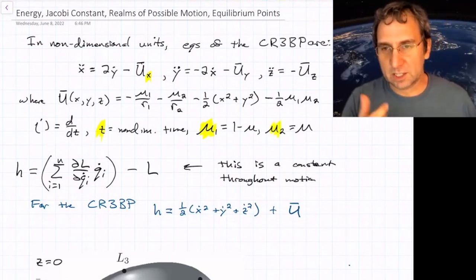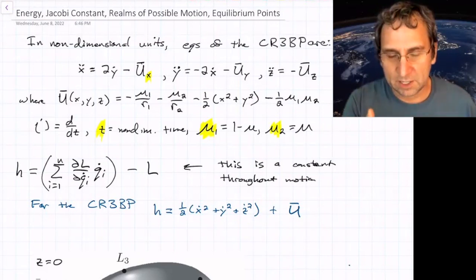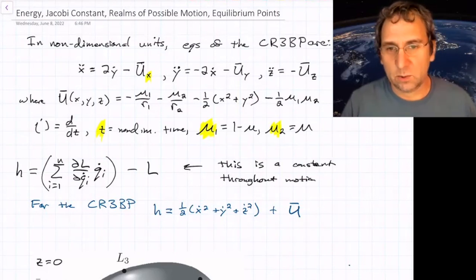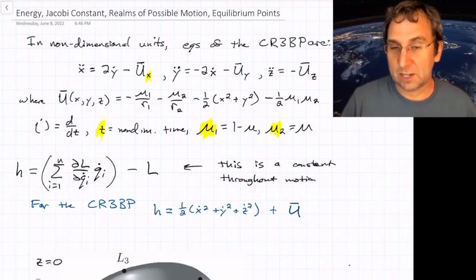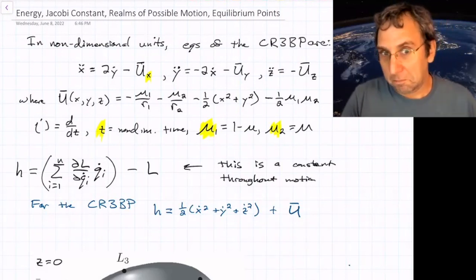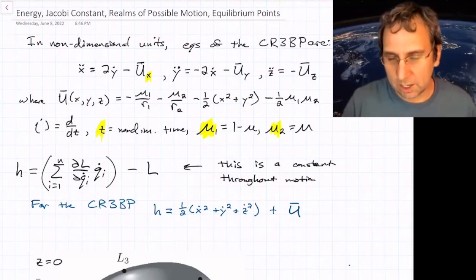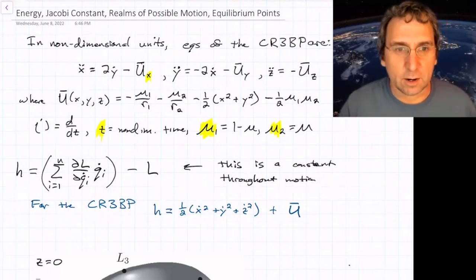Effectively, we've said that the sum of the two primary masses is equal to one, or that's the unit of mass. That, along with the unit of time and the unit of distance we've chosen, effectively makes the gravitational constant equal to one in these units. So that's why G will not show up.